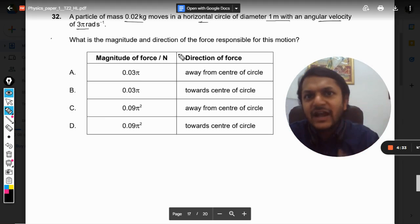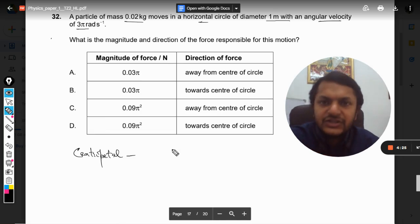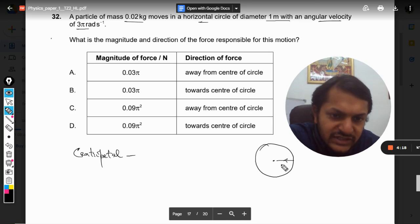So we want to find the force that is responsible for this circular motion, and what is that force? Centripetal. Centripetal force is the force without which the circular motion can never take place, and this is a force that is always directed towards the center.